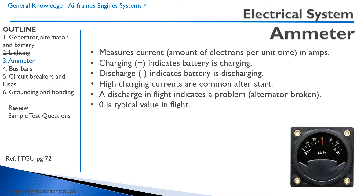A discharge in flight indicates a problem such as an alternator failure. After a discharge, you may start having electrical failures as the battery depletes. When you do have a discharge in flight, look into it right away, follow the emergency checklist, and consider landing sooner rather than later — especially if you're flying at night or in instrument meteorological conditions.